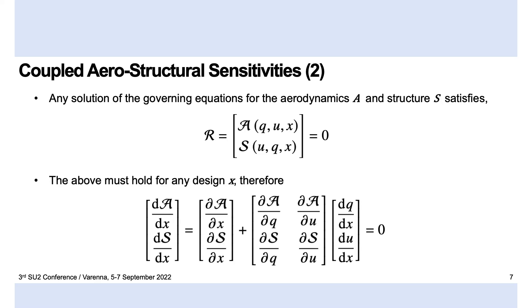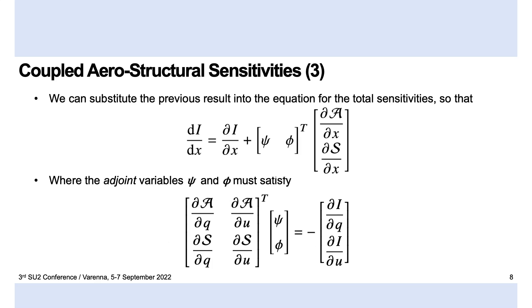We can use the chain rule, as well as the observation that the combined aerostructural state Q and U must satisfy that the residuals of the governing equations are zero for all solutions of the governing equations for any design X, in order to rewrite the calculation of the total derivative of our quantity of interest, i, in terms of the design X, in terms of the so-called adjoint variables.